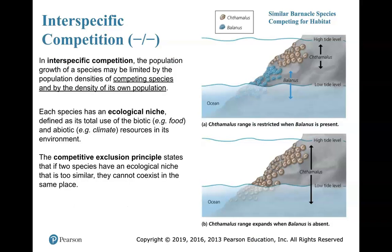Let's first talk about a negative-negative example: competition. In interspecific competition, different species compete for a resource — usually food, but I'm giving you an example of space, as we see with barnacles. An ecological niche is defined as that species having the biotic and abiotic resources in its environment at its disposal. For biotic, food is a great example — what energy will it acquire? Abiotic factors include climate, space, and density.